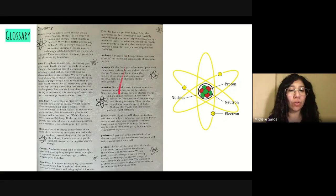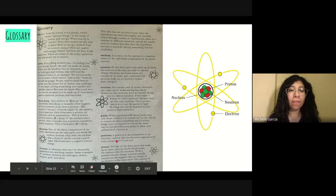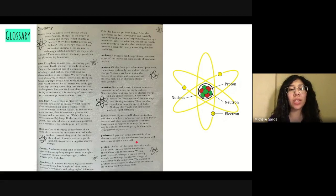Now let's go over to positron. A positron is the antiparticle of an electron, sort of like the electron's opposite evil twin, except that it's not evil.